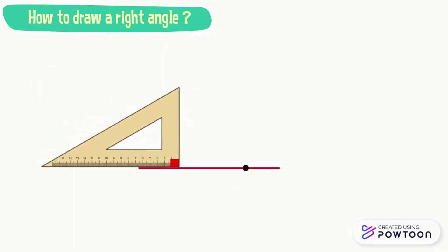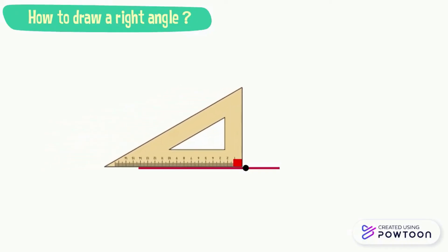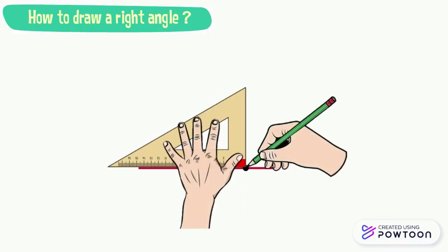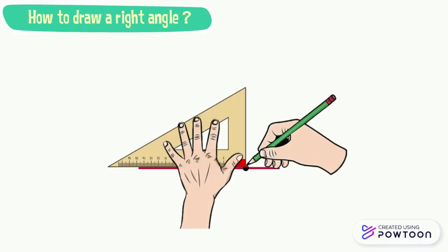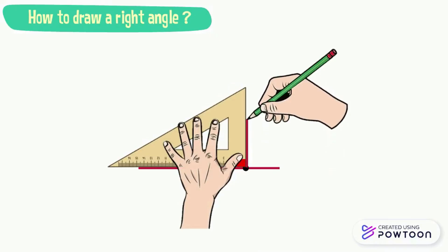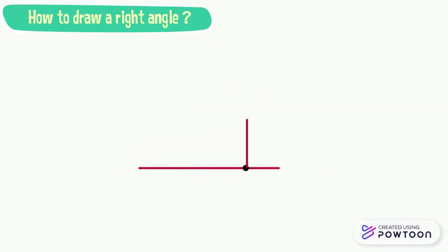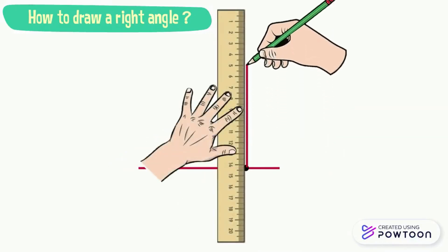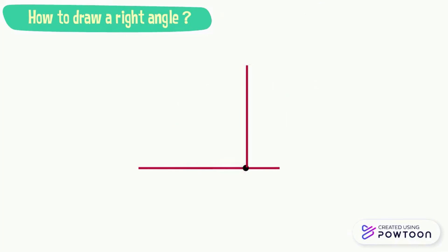Then, slide the set square to the required point by placing the vertex of the right angle of our set square on this point. Third, with our pencil, draw the other side of the right angle. And now, with a ruler, we can extend this side. And here we have drawn a right angle. Don't forget to mark the sign of the right angle.